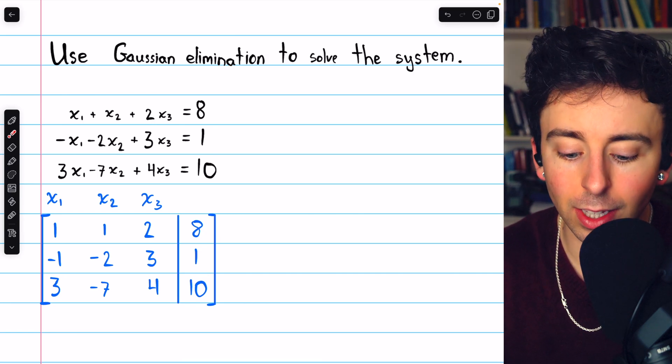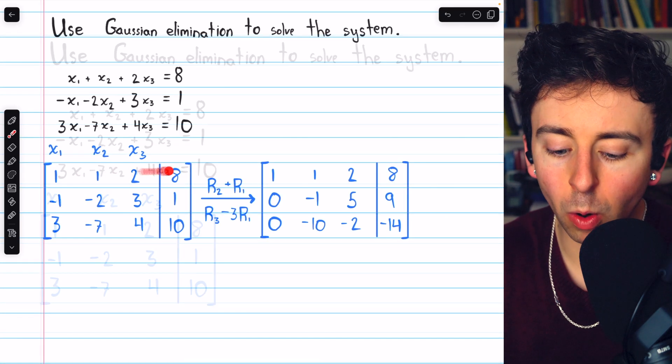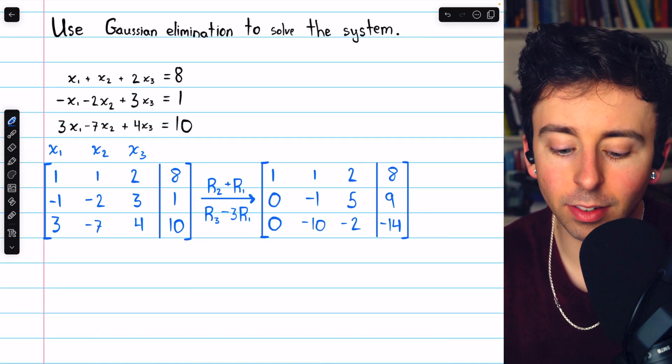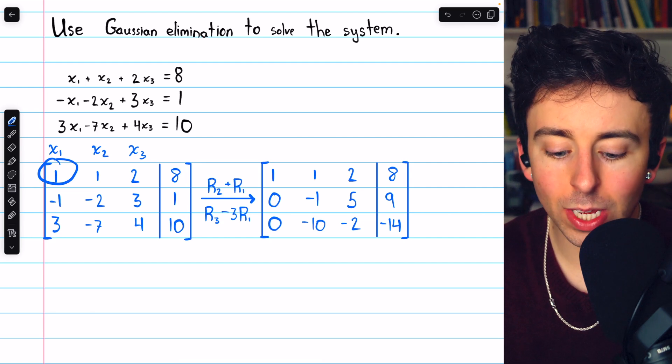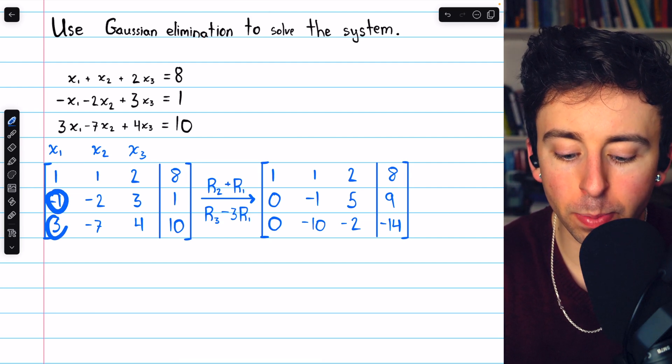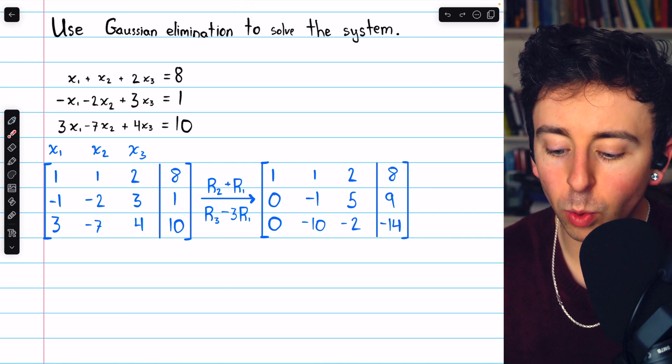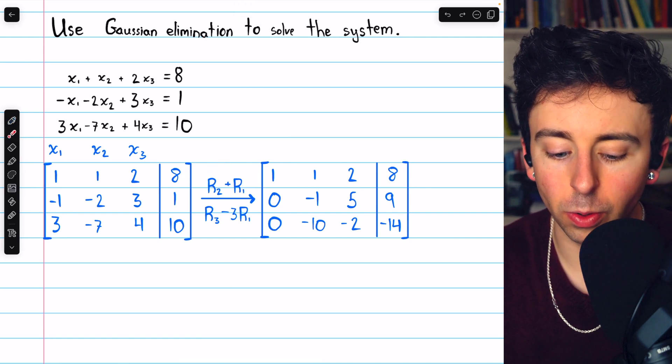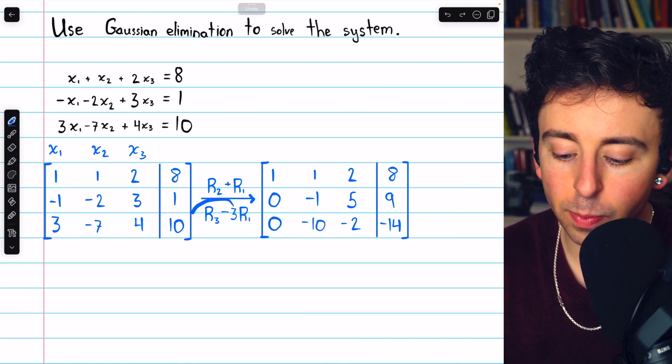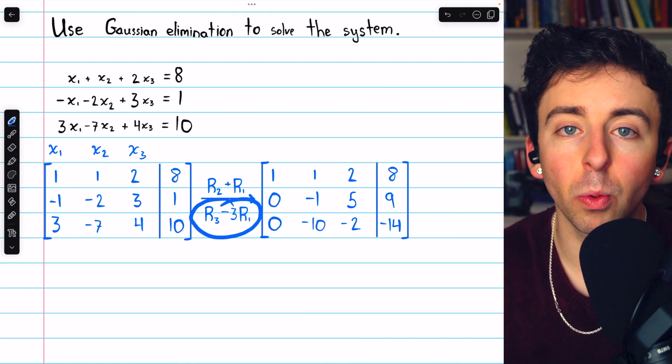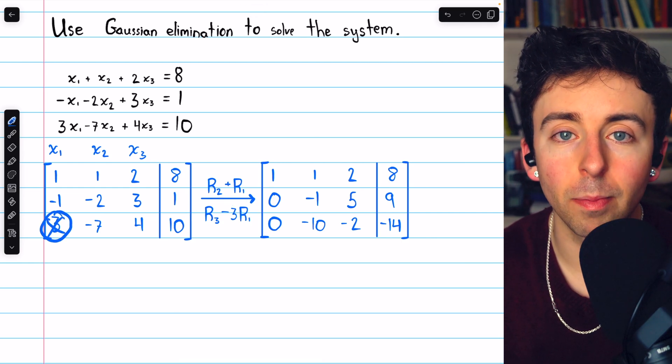Now we'll perform Gaussian elimination on this augmented matrix in order to solve the system. In row one our leading entry is already positive one which is exactly what we want but then we have to introduce zeros below that leading one. So to do that we'll add row one to row two, that way this negative one will become a zero, and we'll subtract three copies of row one from row three, that way this positive three will become a zero.